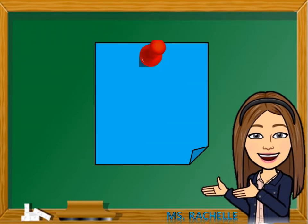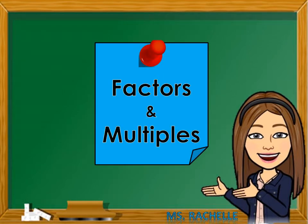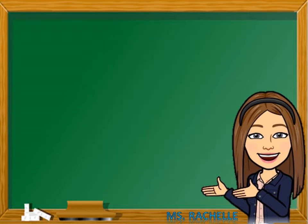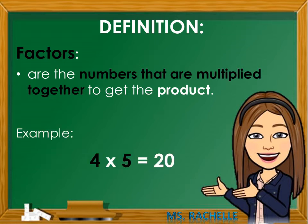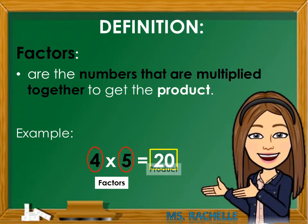Let's begin studying about factors and multiples. Let's define the word factors. Factors are the numbers that are multiplied together to get the product. Example: 4 times 5 equals 20. In this given multiplication equation, 4 and 5 are called factors, or the numbers that are multiplied together. And 20 is called the product, or the answer in multiplication.